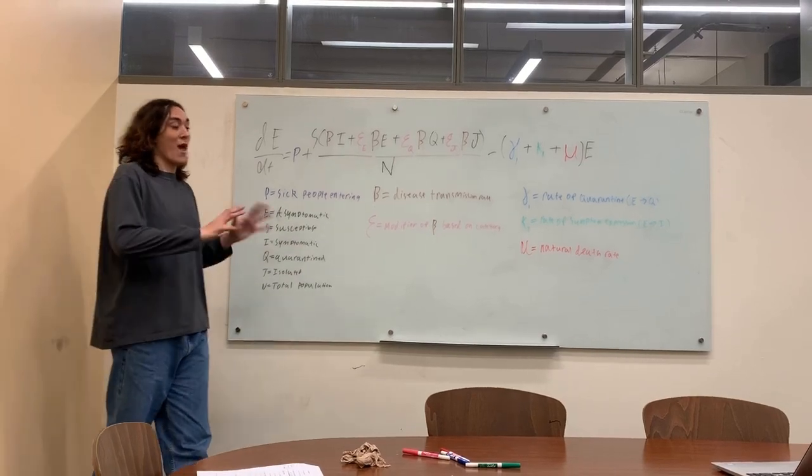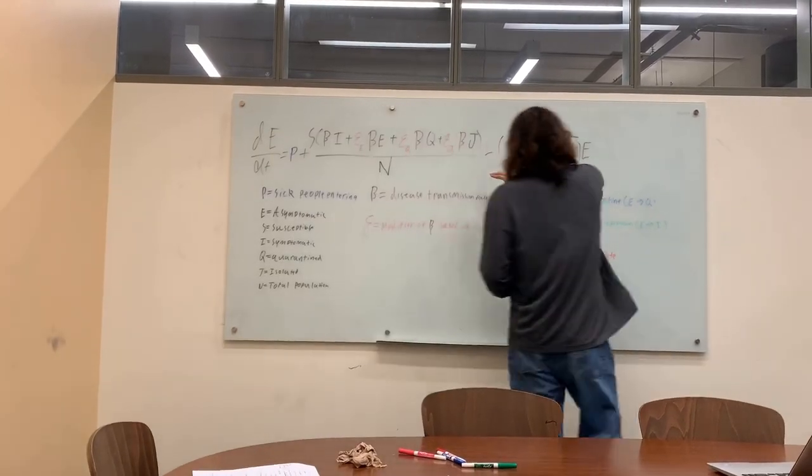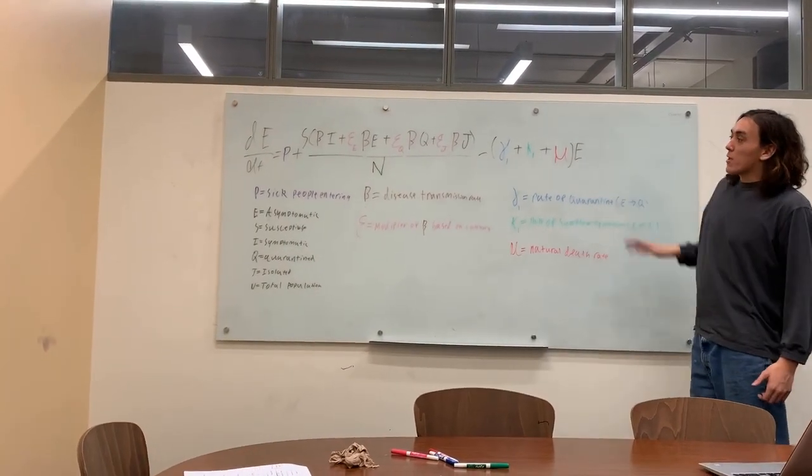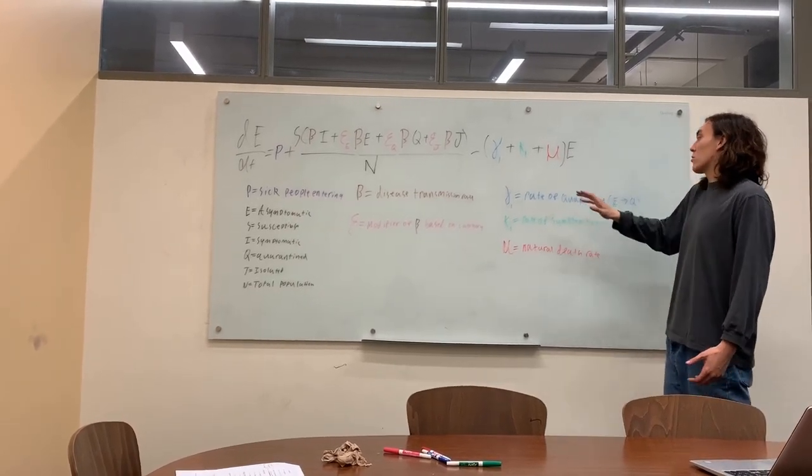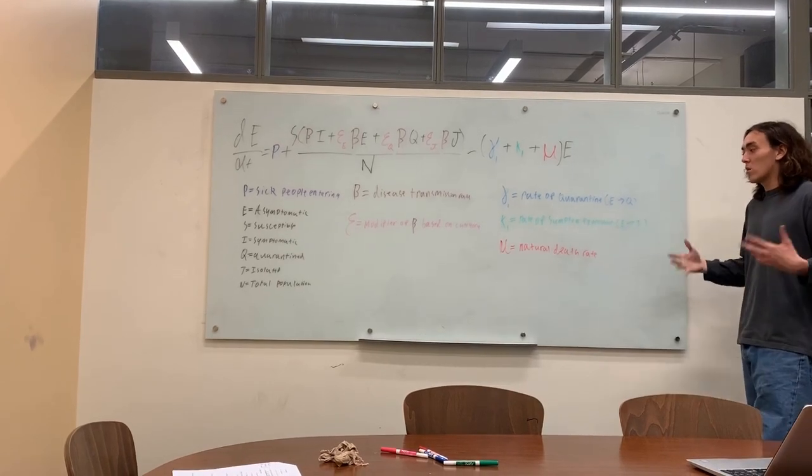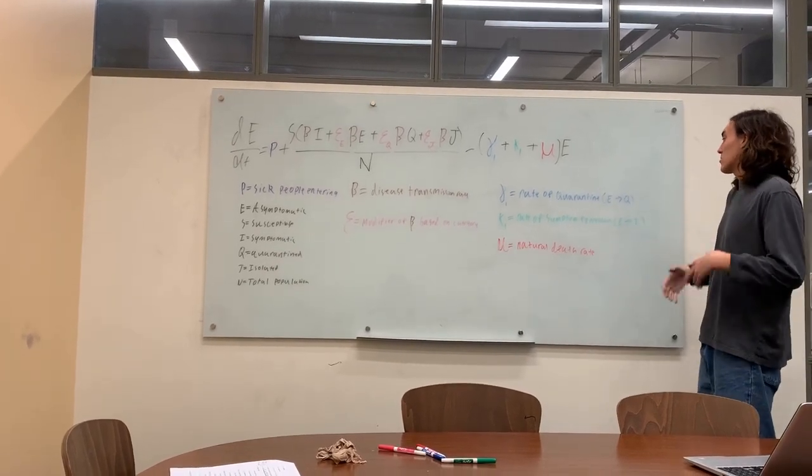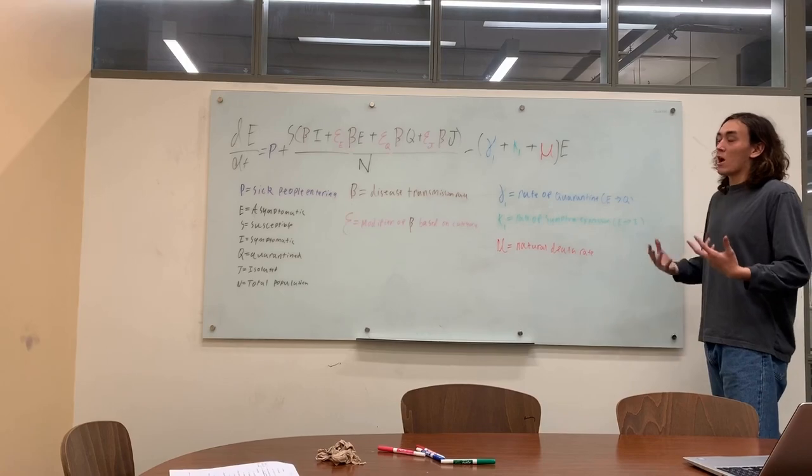To go over here, we have the rate at which people leave E, which is determined either by the rate of quarantine, E to Q, the rate of symptom expression, E to I, or just natural non-disease rules.